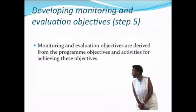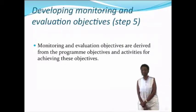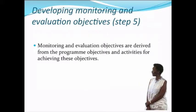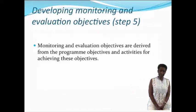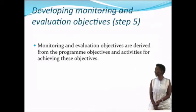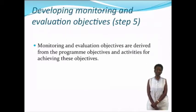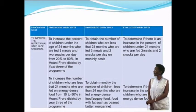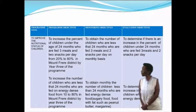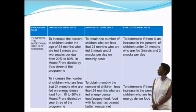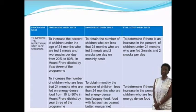The next step, step number five, is to develop monitoring and evaluation objectives. Monitoring and evaluation objectives are derived from the program objectives, as well as from the activities aimed at achieving those objectives. You have the goals, from the goals you derive your SMART objectives, and then you can also derive your monitoring and evaluation objectives from the program objectives. Here is an example of a table: the first column has your goal, the second column has your program objective, the third column has your monitoring objective, and the last column has your evaluation objective. All of these should speak to each other.